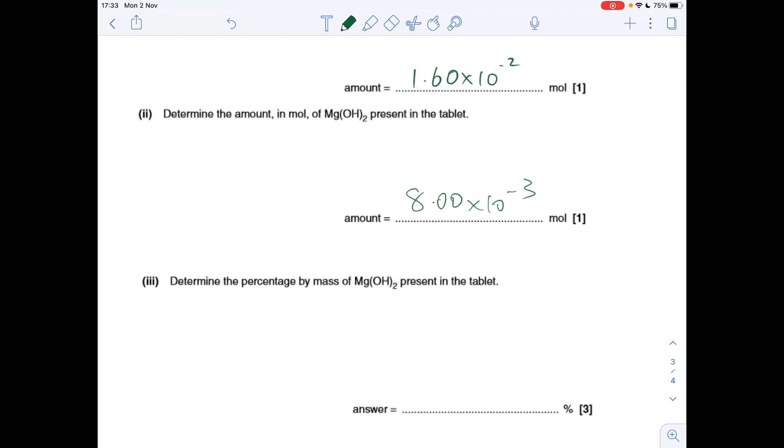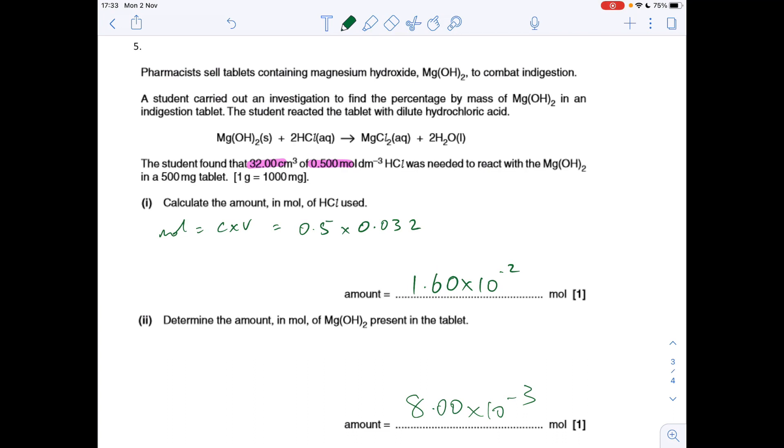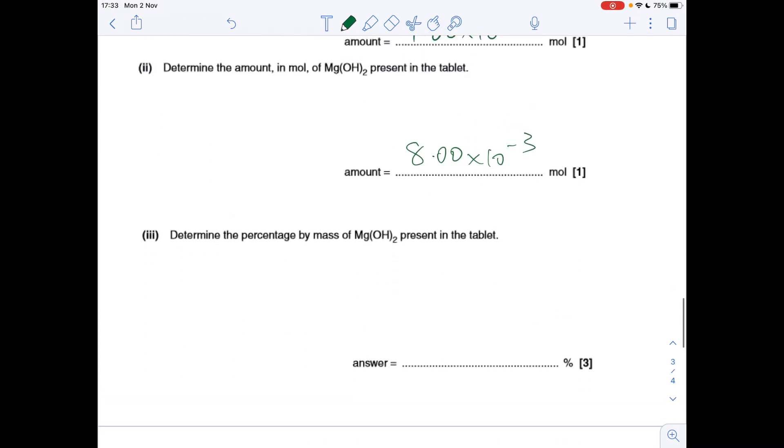The percentage by mass of magnesium hydroxide in the tablet. We need to work out how many grams of magnesium hydroxide are in the tablet and then compare that to the mass of the tablet, which was 500 milligrams, and express that as a percentage. The mass of Mg(OH)2 in the tablet is moles times MR: 8 times 10 to the minus 3 times the MR of magnesium hydroxide 58.3, that comes out at 0.4664 grams. The tablet has a mass of 500 milligrams, which is 0.5 grams. So the percentage of Mg(OH)2 is 0.4664 divided by 0.5 times 100, and that comes out at 93.3%.